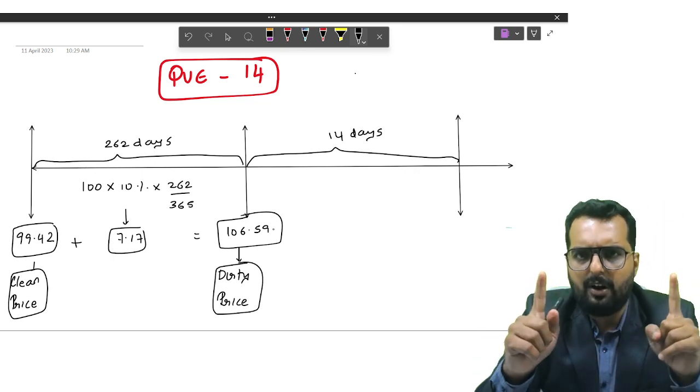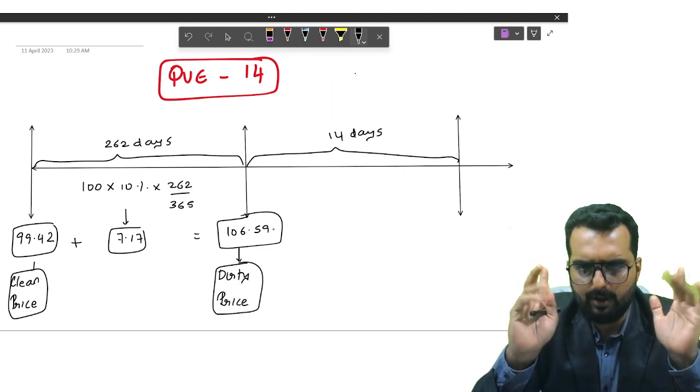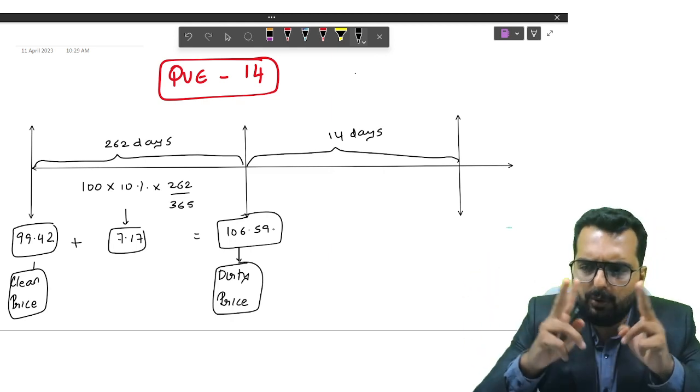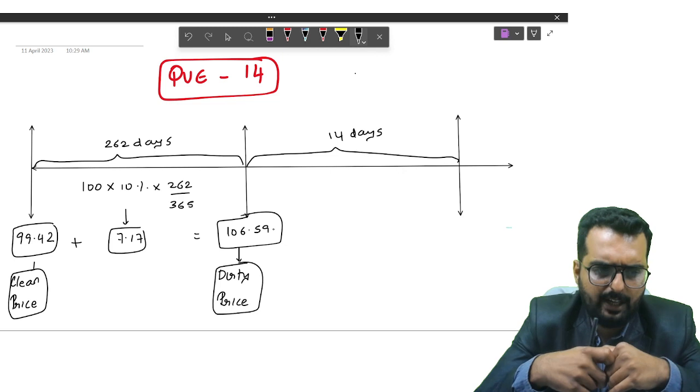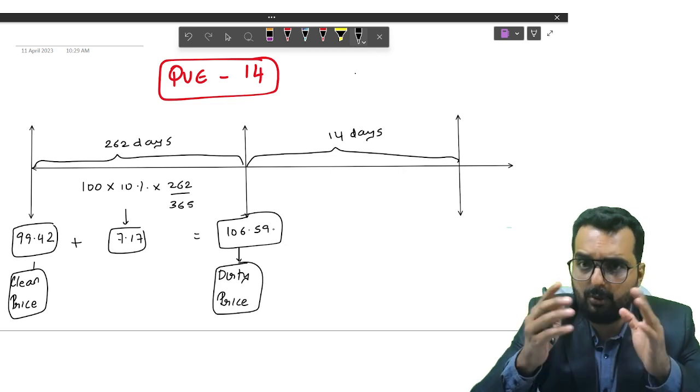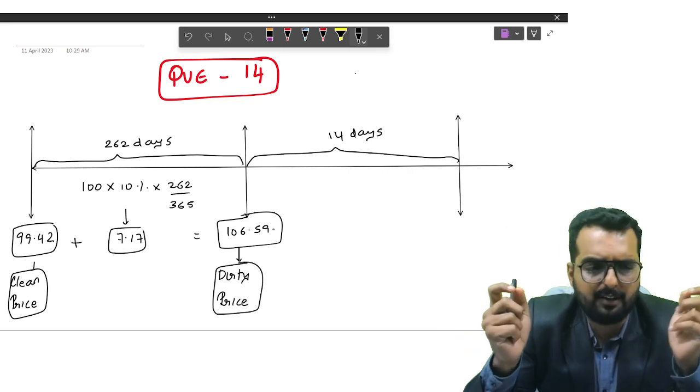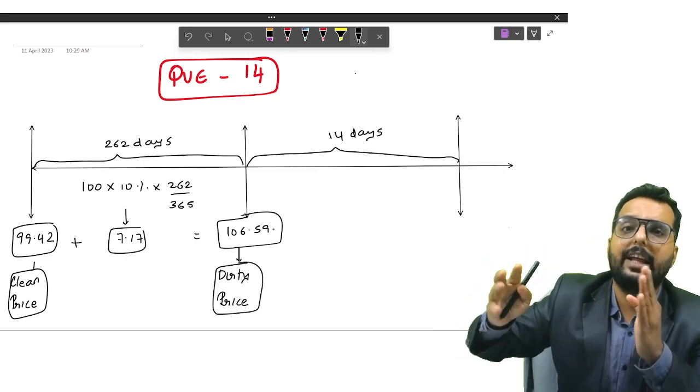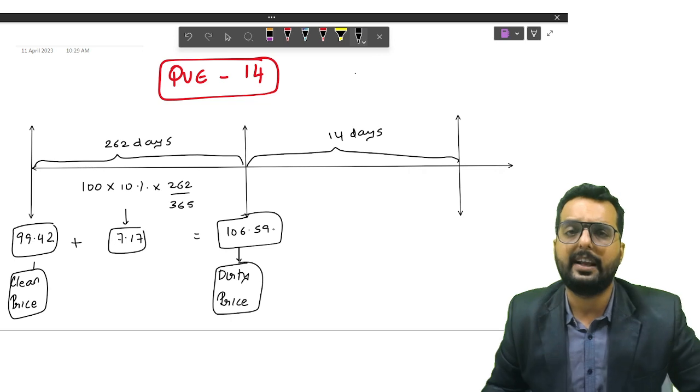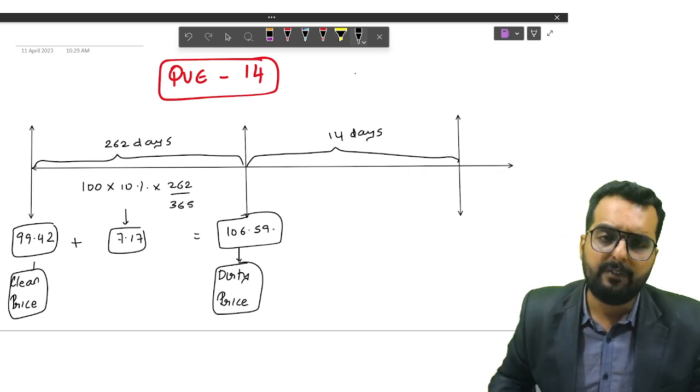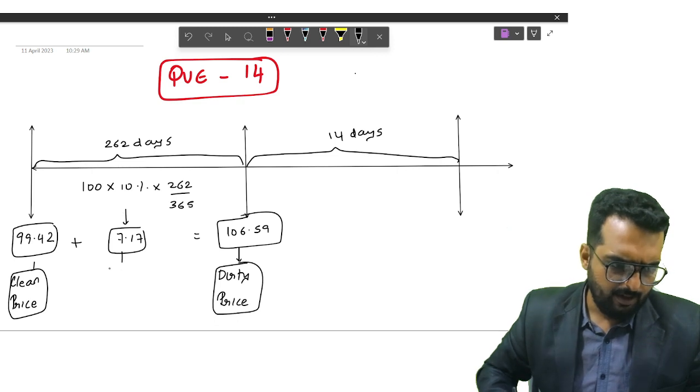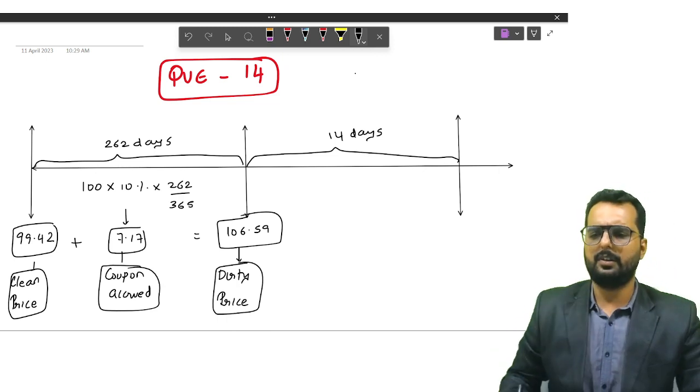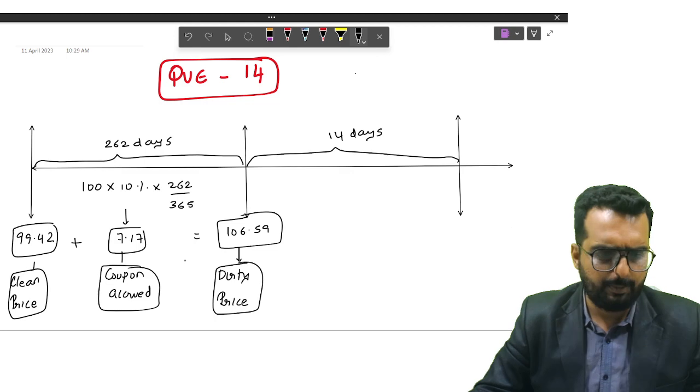I will repeat once again. As of now, what is the market price of the bond? It is 99.42. The loan is given after how many days? Loan is given after 262 days. So for 262 days, we will accrue some interest, correct? That interest is 10 percentage coupon on 100 for 262 days. That turns out to be 7 rupees. So today the market price is 99 plus 7 rupee. My cumulative price on the date on which I am giving loan is turning out to be 106.59. This price, that is issue price plus coupon accrued, if I add up these two things, I get the dirty price. Everybody clear with this part?